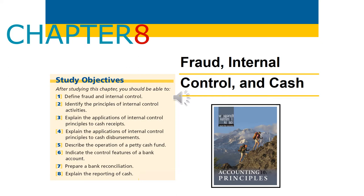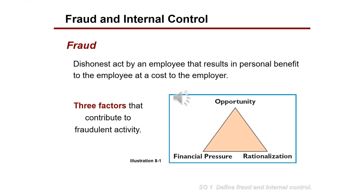So what is fraud? Fraud is a dishonest act by an employee that results in personal benefits to the employee at a cost to the employer or the company. There are mainly three factors that contribute to fraudulent activity: the presence of an opportunity, rationalization, and financial pressures on that employee.